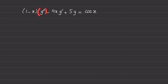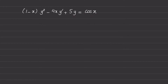Here we have the second order derivative which goes to the power of one and its coefficient is only a function of the independent variable. The term y prime goes to the power of one and its coefficient is only a function of the independent variable, and y to the power of one — the zeroth order derivative — also has a constant coefficient. The right hand side is only a function of the independent variable, so this differential equation is a second order linear differential equation.